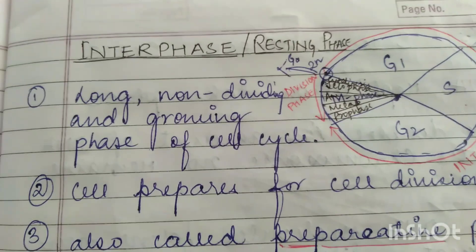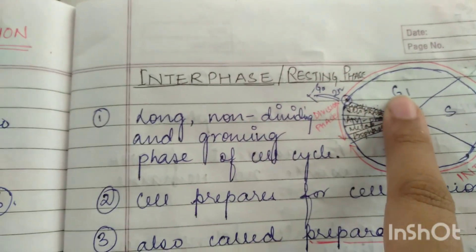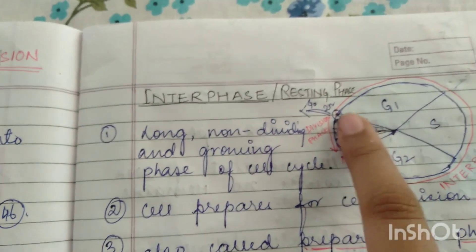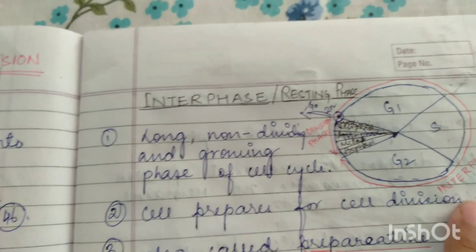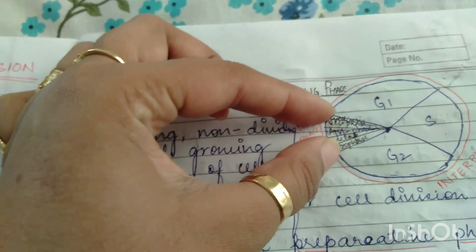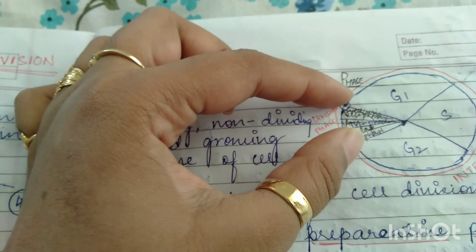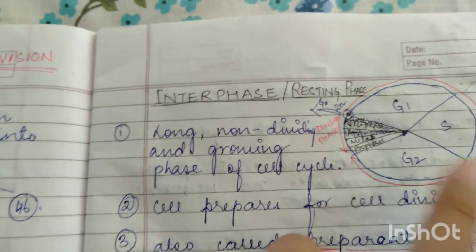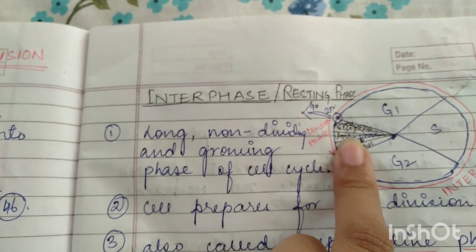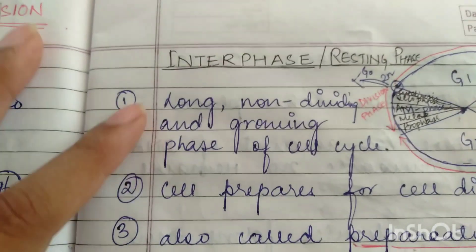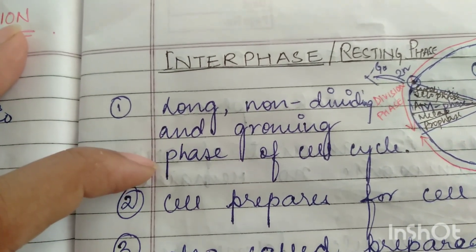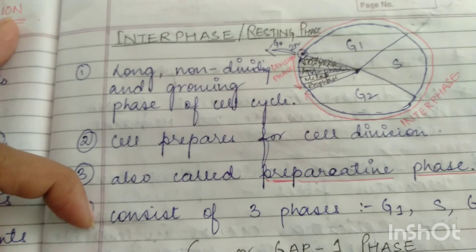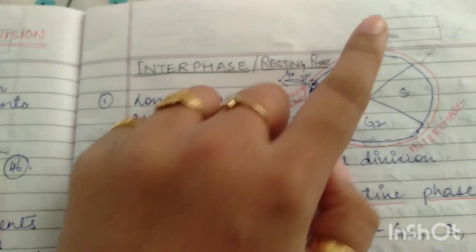Looking at the diagram of the cell cycle, we have G1, S, G2, and M phase. From G1 through G2, this is completely interphase. The cell undergoes preparation in interphase for the main M phase. M phase is the division phase — mitotic division. So for the cell to divide it has to prepare. This preparation stage is called interphase, which includes G1, S, and G2. Interphase is a long, non-dividing and growing phase of the cell cycle. The cell prepares for cell division, which is why it is also called the preparative phase.